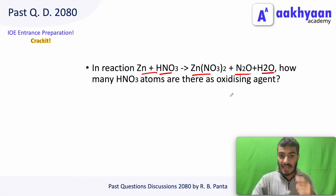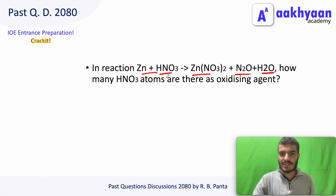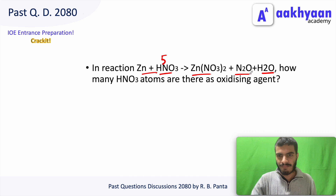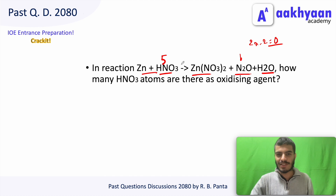How many HNO3 molecules act as oxidizing agent? HNO3 is the oxidizing agent. Checking oxidation state: N in HNO3 has oxidation number +5 (H: +1, O: -2, so +1 + x - 6 = 0, x = +5). Since HNO3 oxidizes other substances, it is itself reduced.